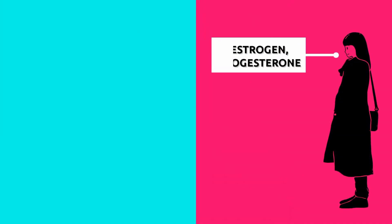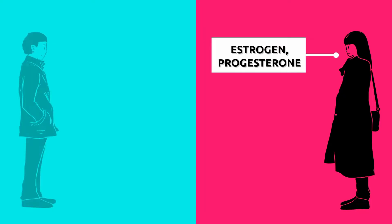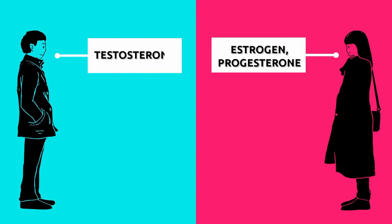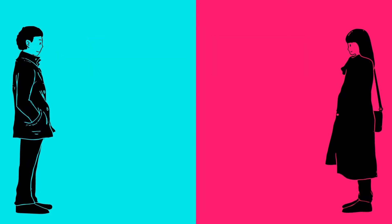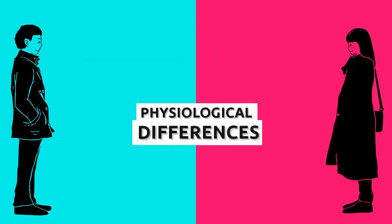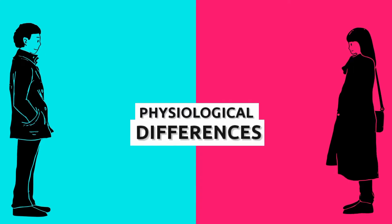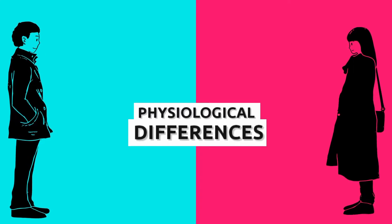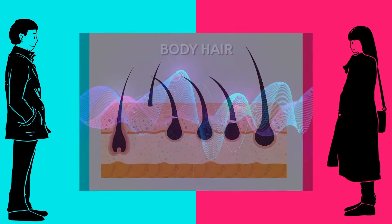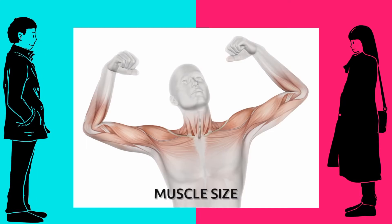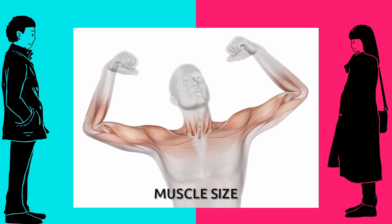For example, females have much higher levels of estrogen and progesterone, while males have higher levels of testosterone. These hormonal differences result in physiological variations between the sexes, such as body hair, voice pitch, and muscle size, among others.